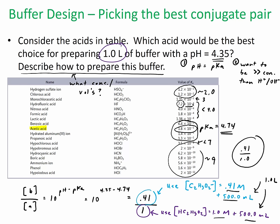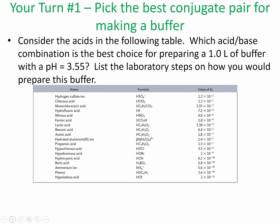If I double-check this in the Henderson-Hasselbalch equation: pH equals pKa plus the log of 0.41 over 1. With total volume of one liter, I should get 4.35 — which confirms the answer. That's how I would do that problem. The first 'your turn' is just like that but with a different pH, so you're going to end up using a different acid than I used.